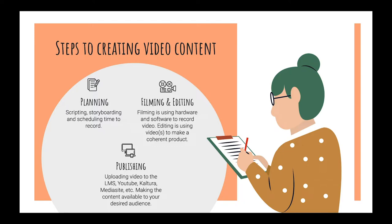Depending on the size and scope of the project, you might need to storyboard, scout locations, write a script, and schedule time to record. Filming and editing are the active process in which you are recording video files, which will then be organized in a coherent and sequential way using editing techniques. Editing used to be done by splicing and joining different film strips into the same reel. Nowadays, you simply combine two or more video files, perhaps adding some special effects, and you're done.